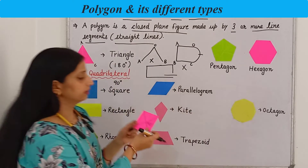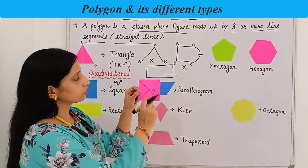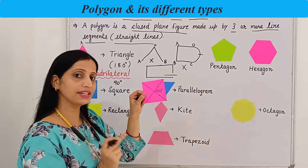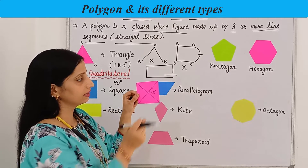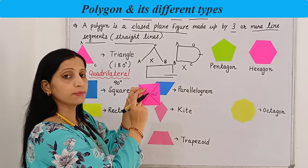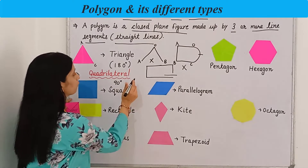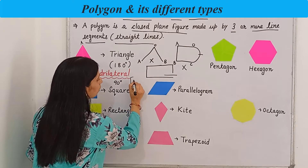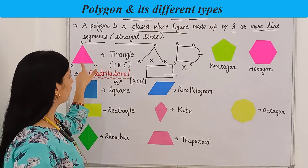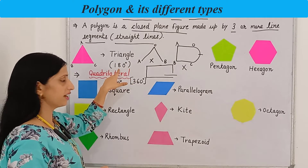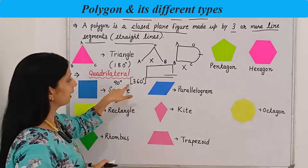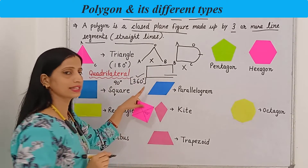This is a square — it has four corners, four sides, all sides are equal in length, and all the angles will be of 90 degrees. The sum of all four angles in the case of a quadrilateral will always be 360 degrees, whereas in a triangle the sum of all angles is 180 degrees.